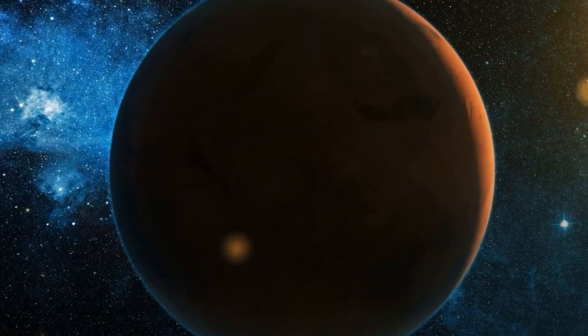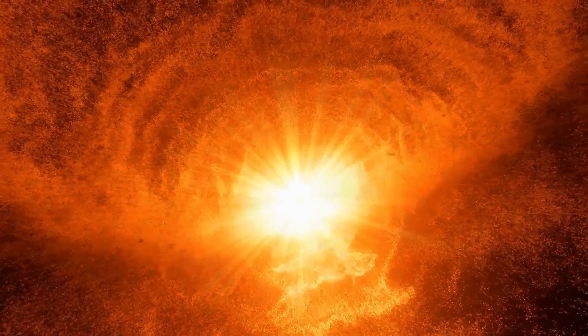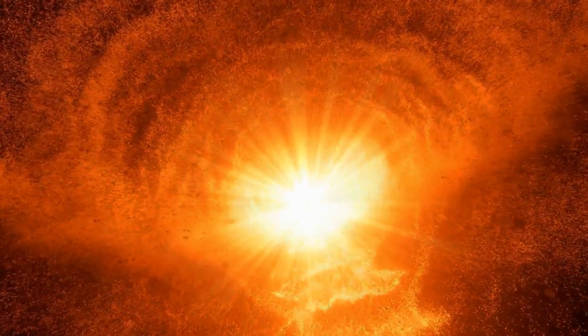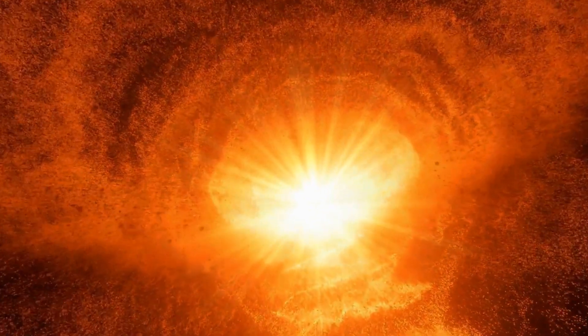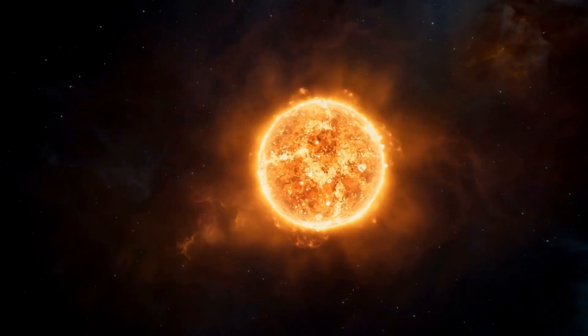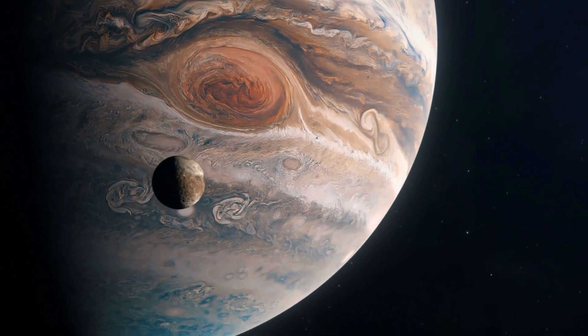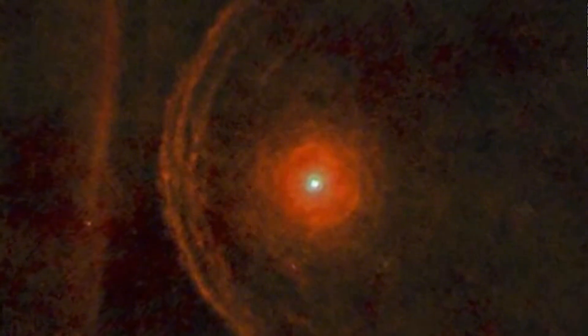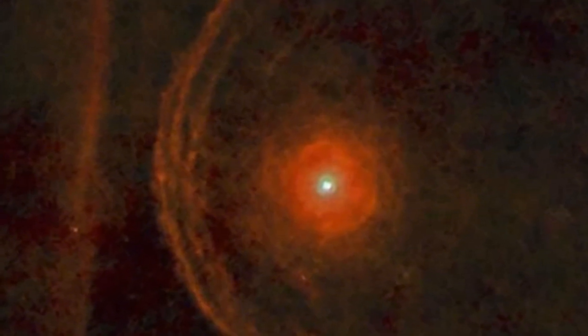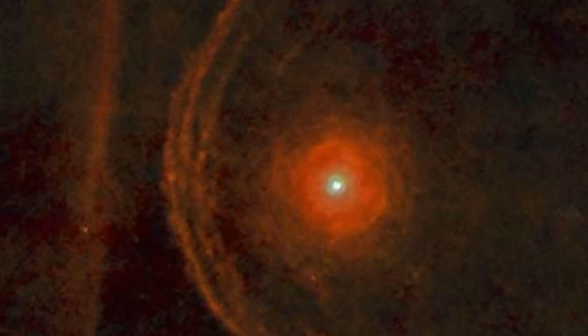Betelgeuse is a red supergiant, a massive star that's reaching the final stages of its life. To give you an idea of how massive, if you replaced our sun with Betelgeuse, its surface would stretch past the orbit of Jupiter. It's about 764 times wider than the sun, and more than 10 times its mass.